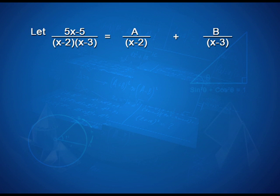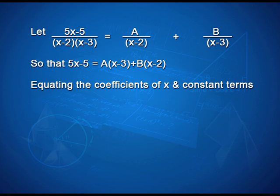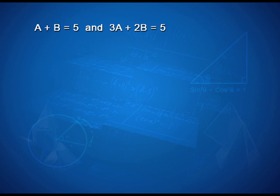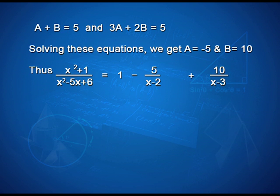Let (5x-5)/((x-2)(x-3)) = A/(x-2) + B/(x-3), so that 5x-5 = A(x-3) + B(x-2). Equating coefficients of x and constant terms, we get A + B = 5 and 3A + 2B = 5. Solving these equations, we get A = -5 and B = 10. Thus, (x²+1)/(x²-5x+6) = 1 - 5/(x-2) + 10/(x-3).